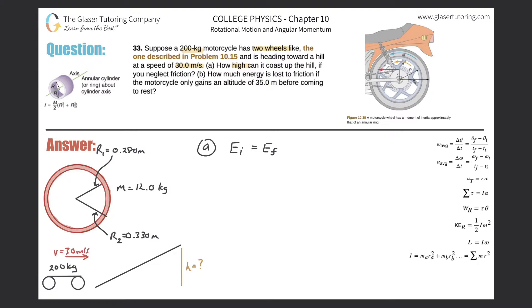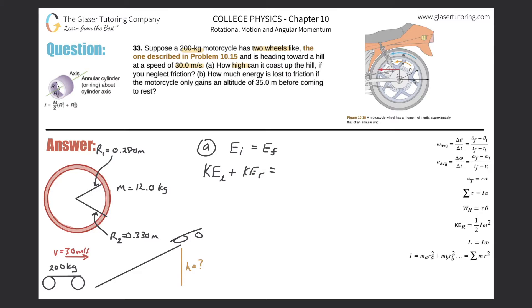In the initial state, the motorcycle has a velocity, giving it translational kinetic energy — the energy of linear motion. It also has rotational kinetic energy because it has two wheels. So we write: kinetic energy of linear motion plus kinetic energy of rotation equals the final energy. There is no initial potential energy since the motorcycle has no height. At the top, the motorcycle is at rest, so all final energy is potential energy.